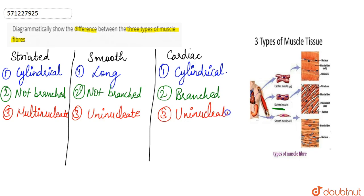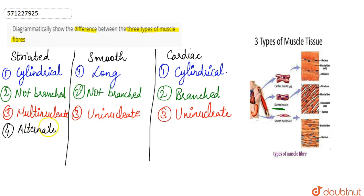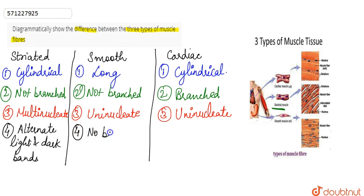Looking at further structural differences: striated muscles show alternate light and dark bands. In the case of smooth muscles, there are no bands present — no such bands are visible.